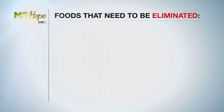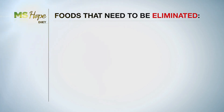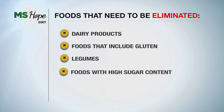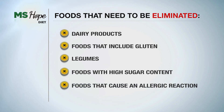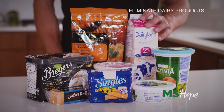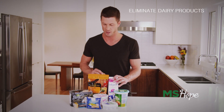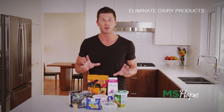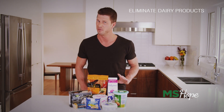Let's get started with the foods you need to totally eliminate: dairy products, foods that include gluten, legumes, foods with high sugar content, and foods that cause an allergic reaction. When you eliminate dairy products, I mean all dairy products. This includes milk of all kinds — 1%, 2%, creamers — all of it's got to go. All cheeses, yogurt, ice cream, and any product that has milk or milk ingredients on the label. You've got to check them all.